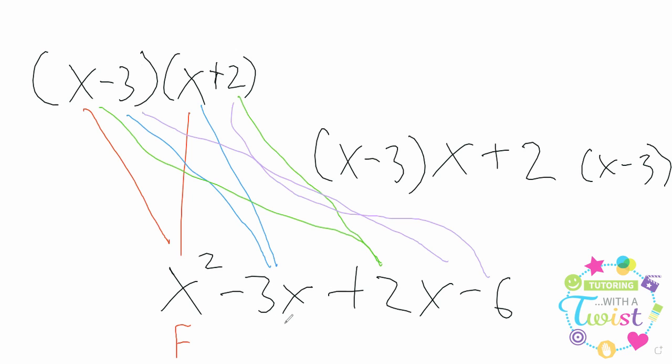We might call that the inside. That negative 3, that x, they combine to make the inside. We've also got this x and that 2, looks like the outside to me, as well as this negative 3 and that 2. We'll call that last.